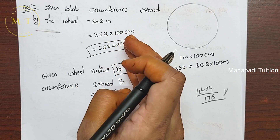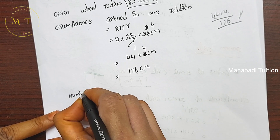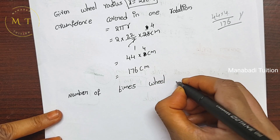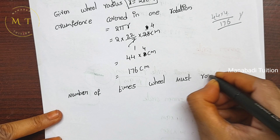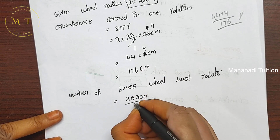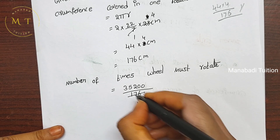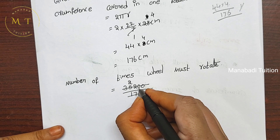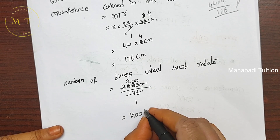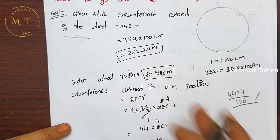Total distance is 35,200 centimeters. Number of rotations equals 35,200 divided by 176. Cancelling, 35,200 divided by 176 equals 200. So the wheel must rotate 200 times to cover 352 meters.